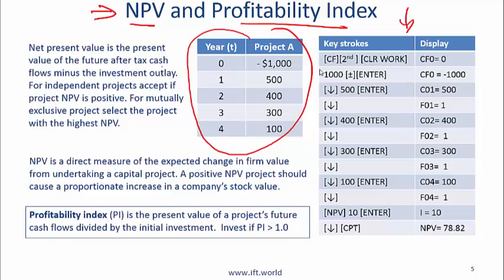Once you find the NPV, what do you do? If the project is independent, accept projects with a positive NPV — this is called the NPV rule. For mutually exclusive projects, select the project with the highest NPV. This point is made towards the end of the reading but since it's related to NPV I brought it up front.